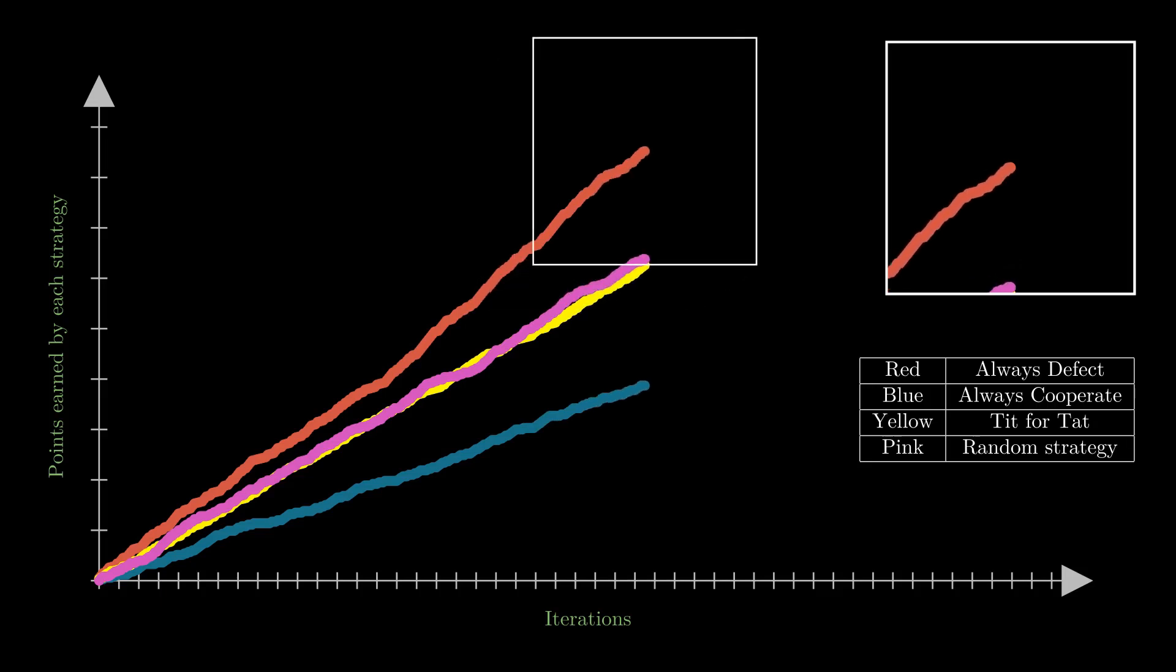Tit for tat and random strategies pitted against random strategy are both random, so they give us very little to predict. But at least they fare better than always cooperate strategy.